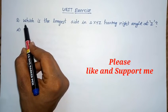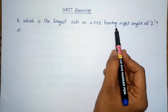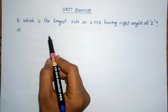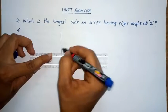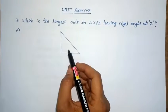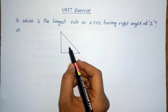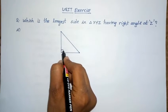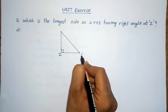Next problem, second one: which is the longest side in triangle XYZ having right angle at Z? First draw a right angle triangle. The right angle is at Z, so this is angle Z. The remaining angles are X and Y.